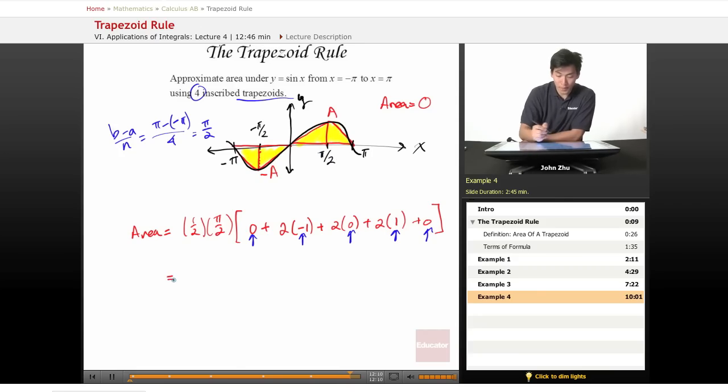And simplifying this, we get one-half pi over 2, negative 2 plus 2, which is zero. So zero multiplied by anything is zero. So we were right by just looking at it graphically.